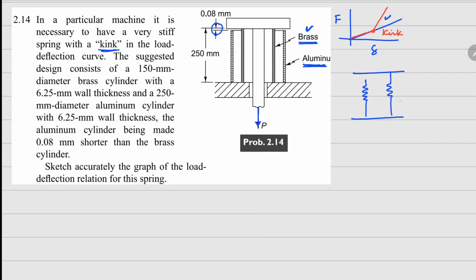Now this is one spring here, this is the second one. The spring with complete length is your brass and the shorter one here is your aluminum. Now how do we define these spring constants?